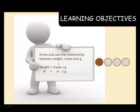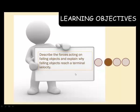Now in this one, hopefully by the end of this video we'll know and use the relationship between weight, mass and G, whatever G is we'll find out shortly. The equations weight equals mass times G or W equals m times G, and also be able to describe the forces acting on falling objects and explain why falling objects don't keep going faster and faster but in fact reach what we call terminal velocity.